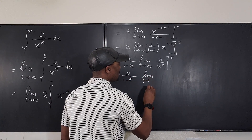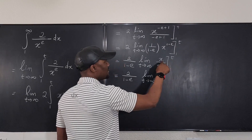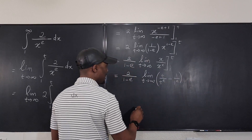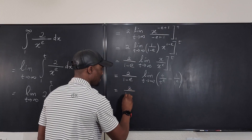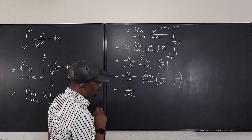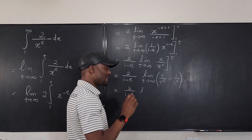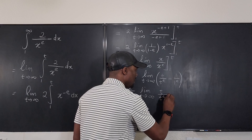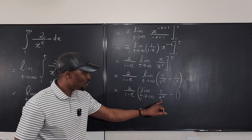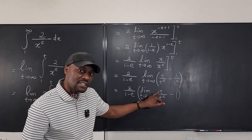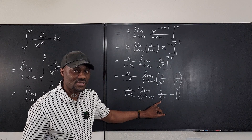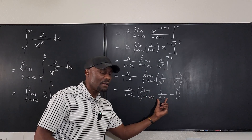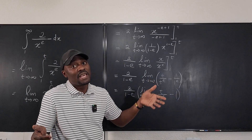At this point we do our substitution. This is 2 over 1 minus e, multiplied by the limit as t goes to infinity of t over t to the e, minus 1 over 1 to the e. Let's clean it up: the limit as t goes to infinity of t over t to the e, minus 1. Now, t has a smaller exponent than t to the e, so t over t to the e will go to zero because the denominator rises faster. Alternatively, divide top and bottom by t to the e: you get 1 on the bottom and t to the negative e on top, which also goes to zero.